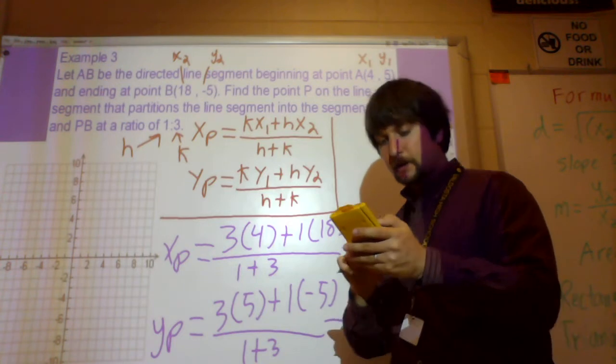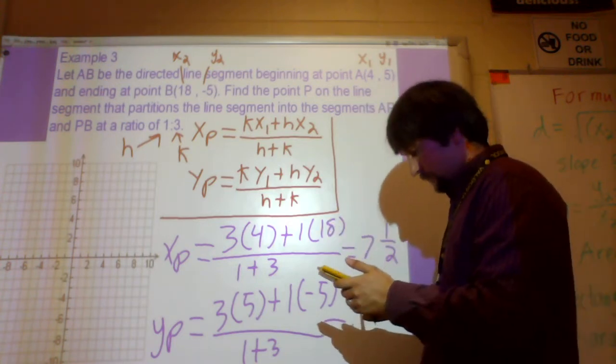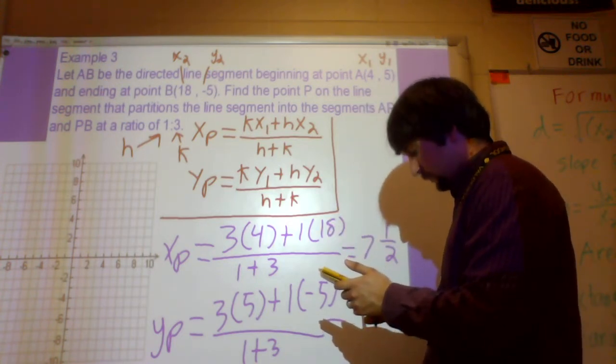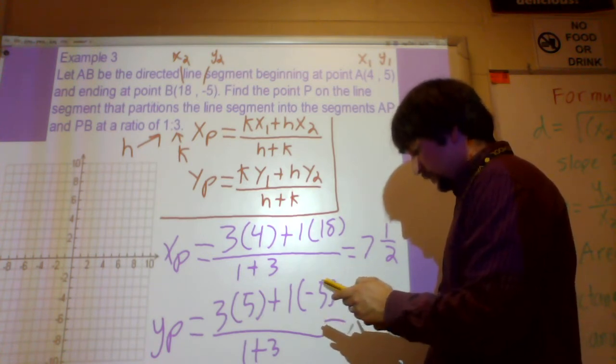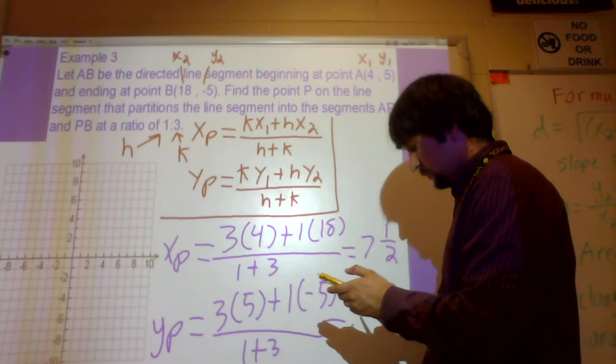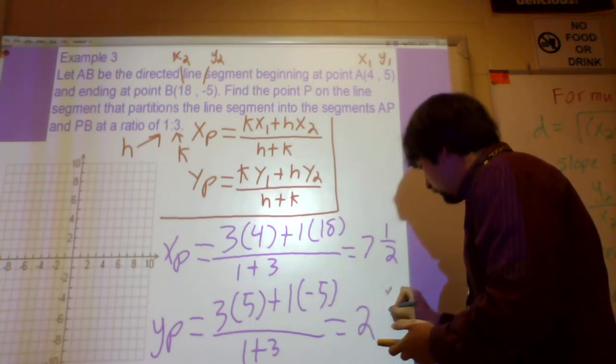And then you just plug this whole thing in your calculator. So you're going to do 3 times 5, plus 1 times negative 5. And that's going to be divided by 4. Change that to a mixed number. So that's going to be 2 and 1 half.